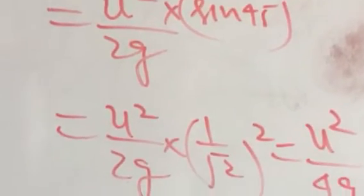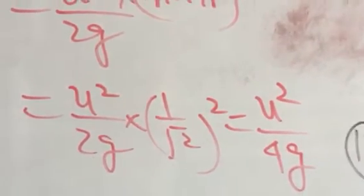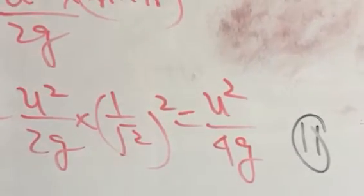Sine 45, 1 upon root 2 whole square. This is what has become u square by 4g. Mark it equation number 2.